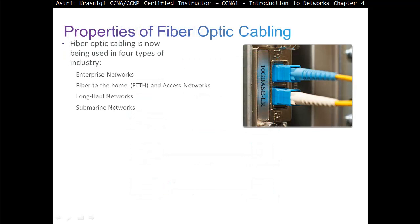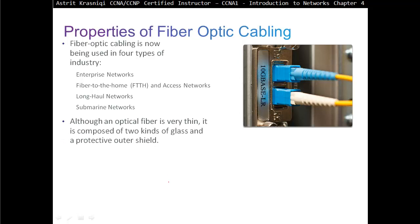Properties of fiber optic cabling: fiber optic cabling is now being used in four types of industry — enterprise networks, fiber to the home (FTTH), access networks, long-haul networks, and submarine networks. Pretty much in the seas and oceans, there are lots of fiber optic cables running around. Although an optical fiber is very thin, it is composed of two kinds of glass and a protective outer shield. We have a core of pure glass, which is the part of the fiber where light is actually carried — we send light pulses through the core.